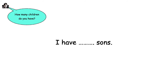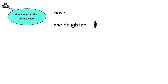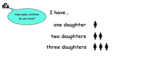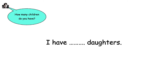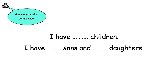Now you say. Listen and repeat. I have one daughter. Two daughters. Three daughters. Four daughters. No daughters. Now you say. How many children do you have?